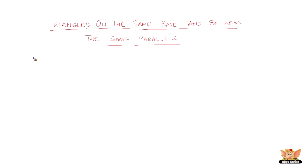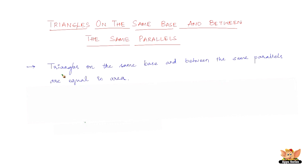In this video, let us look into some of the properties of triangles when the triangles are on the same base and they are between the same parallels. The first property states: triangles on the same base and between the same parallels are equal in area.